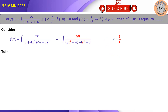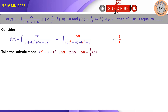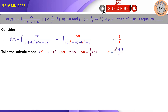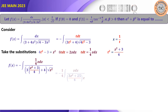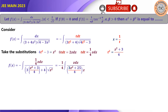We take the substitution 4t² − 3 = z². By differentiation, 8t dt = 2z dz, so 4t dt = z dz, meaning t dt = (1/4)z dz. We also note that t² = (z² + 3)/4. Replacing t dt and t² in the integral and simplifying the constants 1/4 and 3/4, the integral becomes ∫ dz / (3z² + 25).